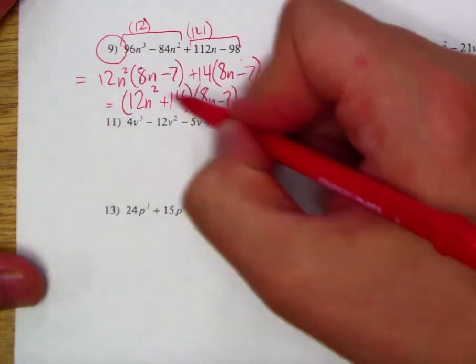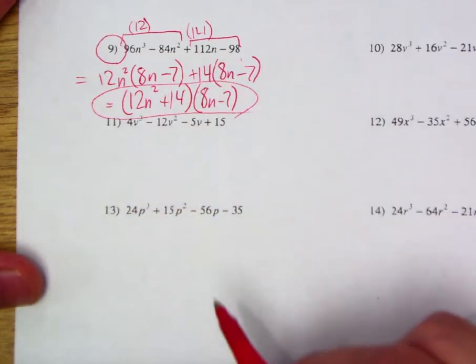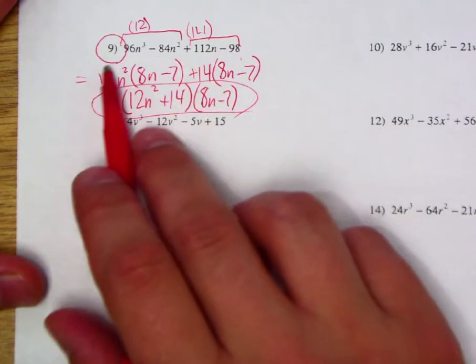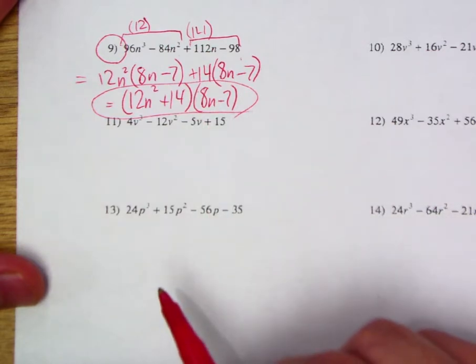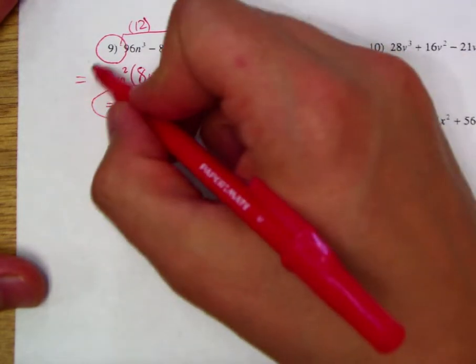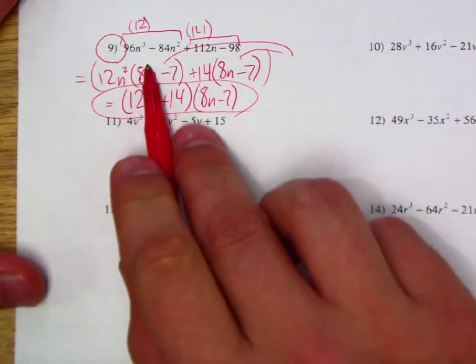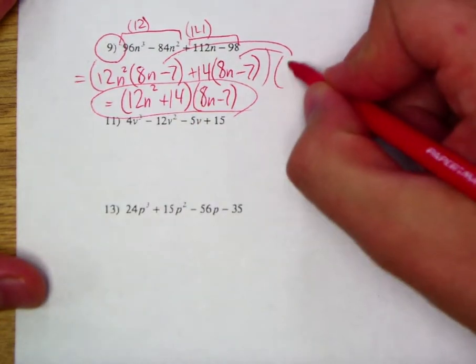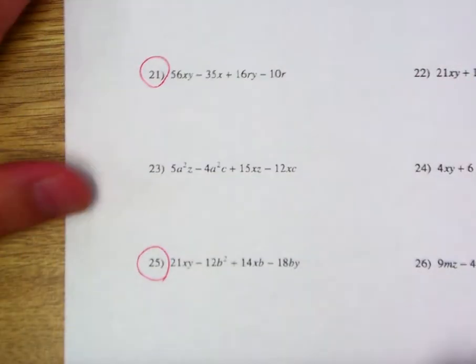Now if it's not really clicking as to why I can simply group the coefficients on these binomials, think about it like this. This is the factor, this whole binomial, this is the factor that the first term and the second term have in common. So if I were to factor an (8n-7) out of both of those, what would I be left with? Well, 12n² and 14. So it's kind of a different way of thinking about what you're actually factoring. It's a bigger type of factor, like a polynomial factor.